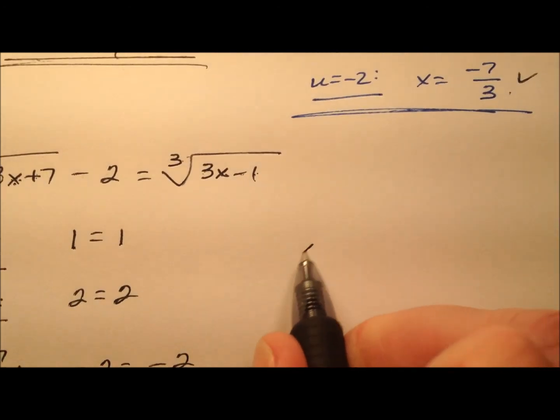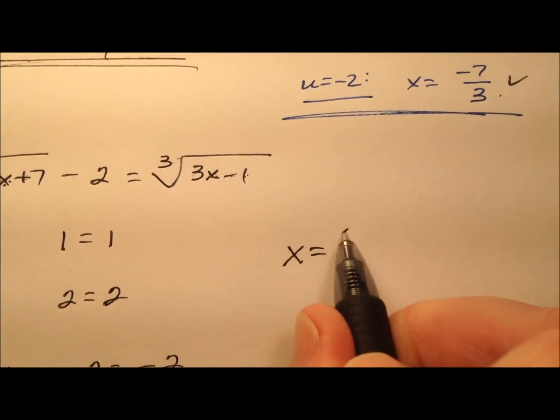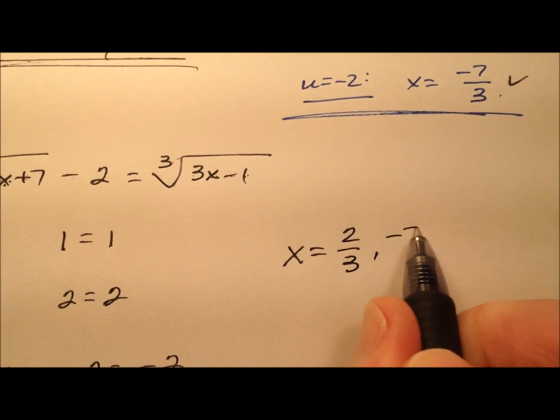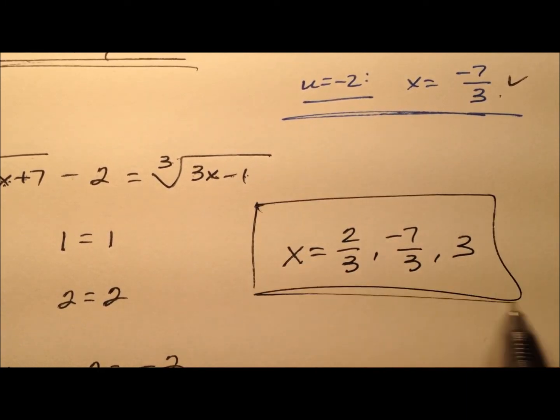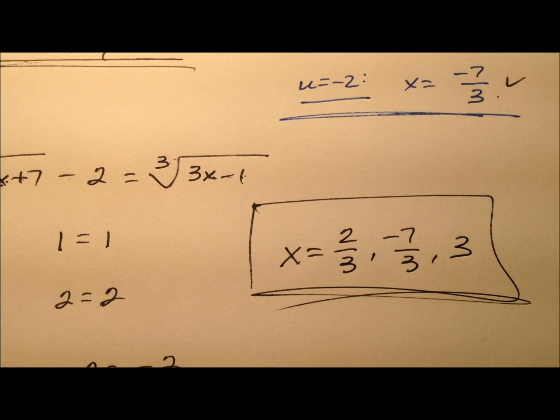So the solution then for this equation, x equals 2 thirds, negative 7 thirds, and positive 3. So there we go.